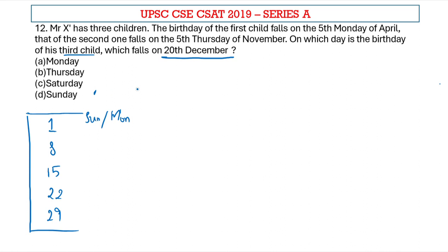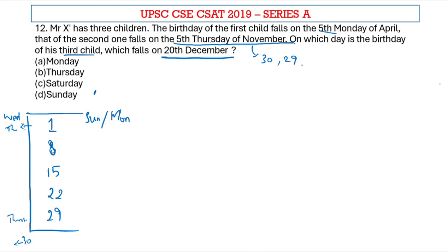From these two possibilities we have to decode which one is going to give the 5th Thursday of November. This same logic applies to November since it also has 30 days. For November to have a 5th Thursday, either the 1st of November should be a Thursday — giving a Thursday on the 29th — or the 1st of November should be a Wednesday, so that the 30th will be a Thursday.